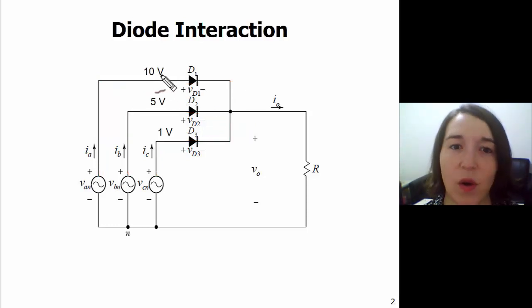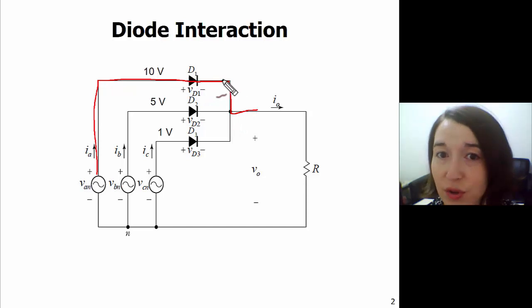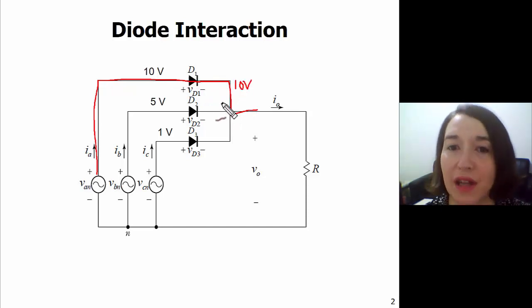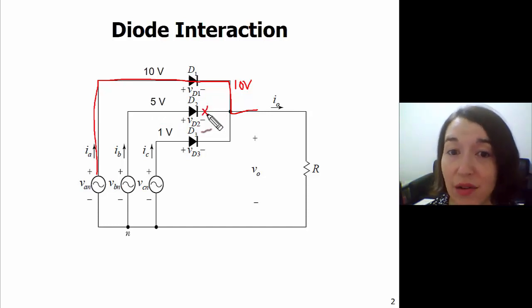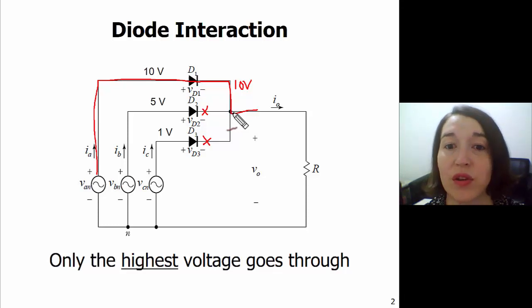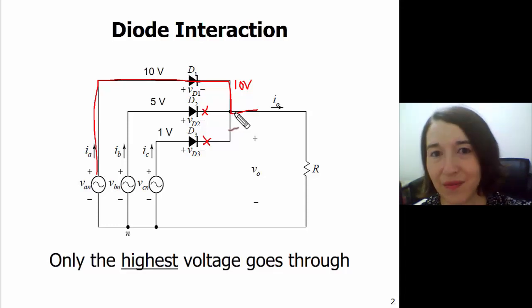What will actually happen is only the highest voltage will go through. So this current will go through, which means that the voltage on this side is 10 volts. And if we look at the other two diodes, this is 5 volts on this side, 10 on this side. That's reverse bias, so it's blocking. And the same here, 10 volts on this side, 1 volt on this side, this diode will block. And so only the highest voltage will go through and be seen on the other side of the diodes in this configuration.